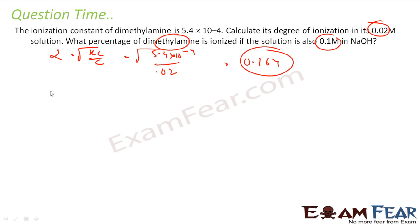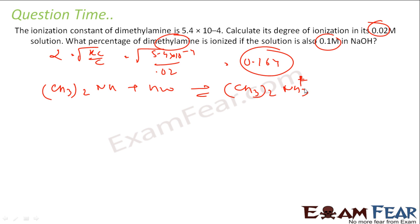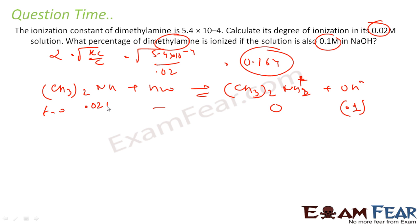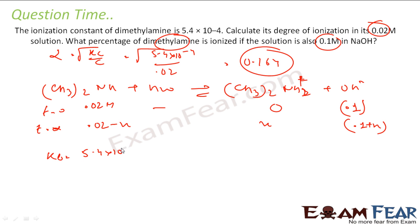The next question asks for the percentage of dimethylamine ionized when the solution already has 0.1M OH⁻. Setting up the ICE table for (CH₃)₂NH + H₂O ⇌ (CH₃)₂NH₂⁺ + OH⁻: at t=0, dimethylamine is 0.02M, (CH₃)₂NH₂⁺ is 0, and OH⁻ is 0.1M. At equilibrium: 0.02−x, x, and 0.1+x respectively. Kb = 5.4×10⁻⁴ = x(0.1+x)/(0.02−x).